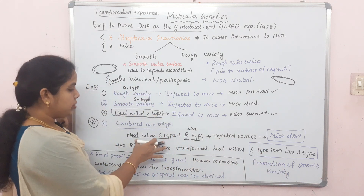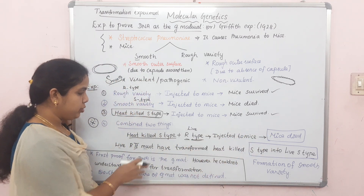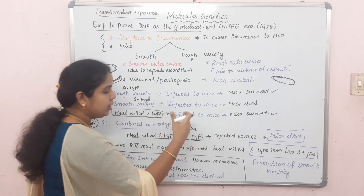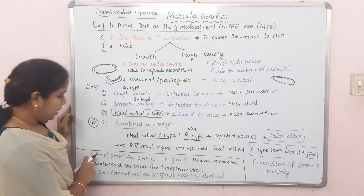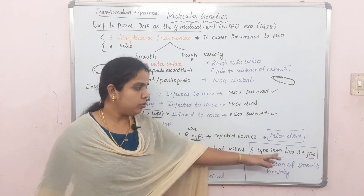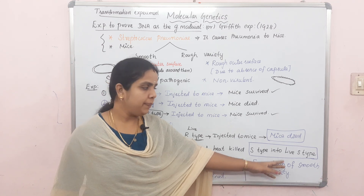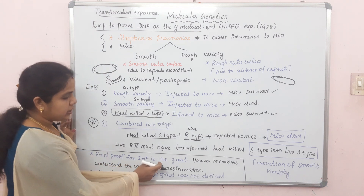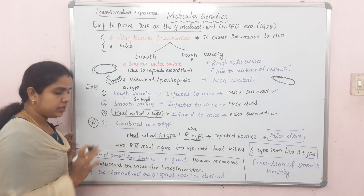So the formation of smooth variety from rough variety explains why the combined injection caused pneumonia and the mice died. This is the first proof that DNA is the genetic material. Griffith's experiment is the first experiment to provide proof for DNA as genetic material.